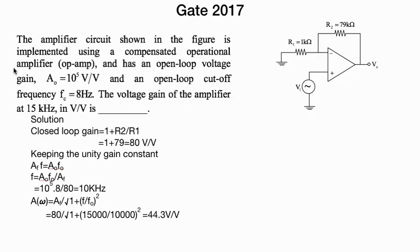Now let's look at a question that appeared in Gate 2017. In this, an open loop gain is given and an open loop cutoff frequency is given. Now you need to calculate the voltage gain.